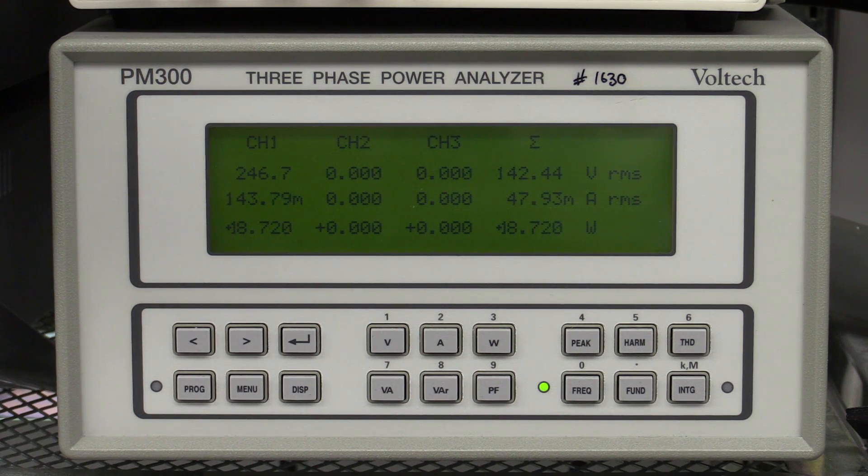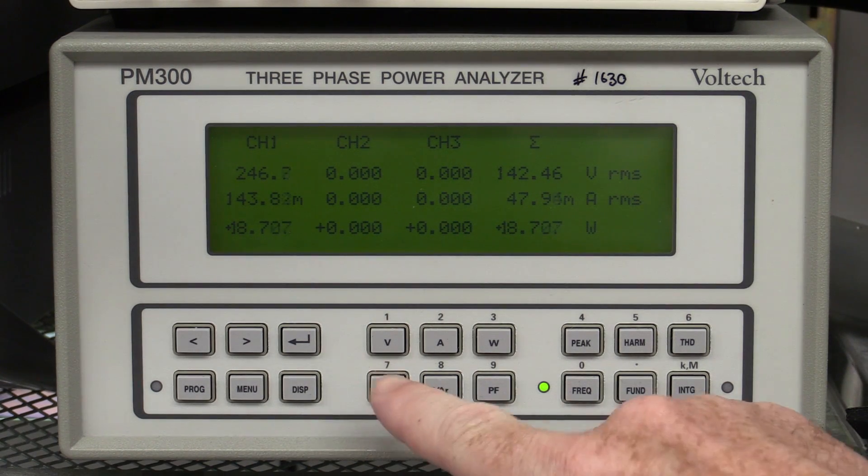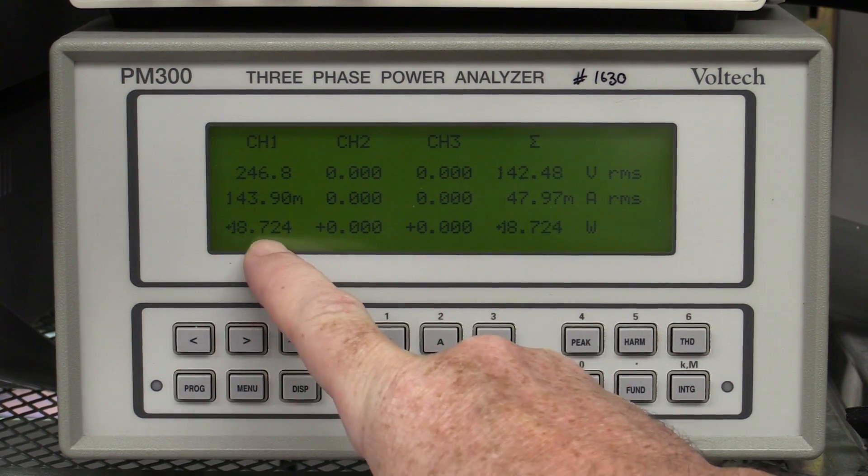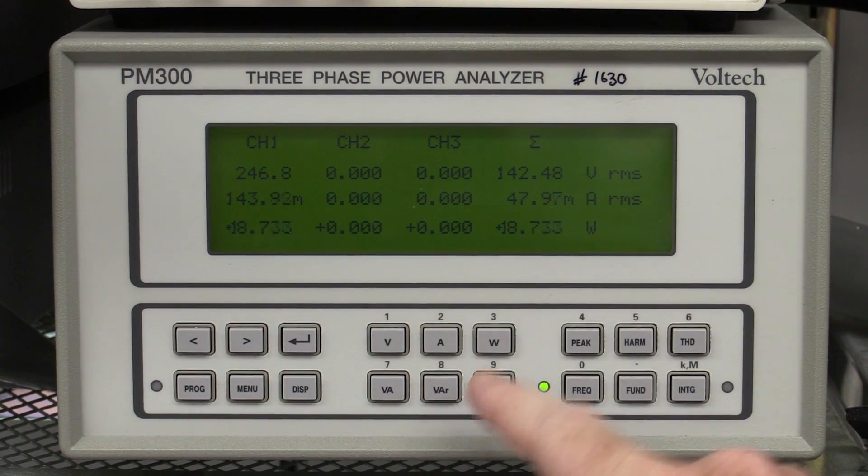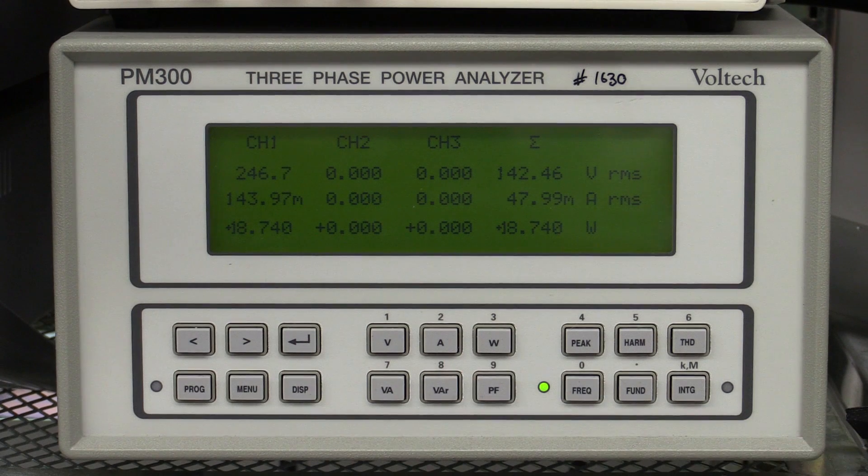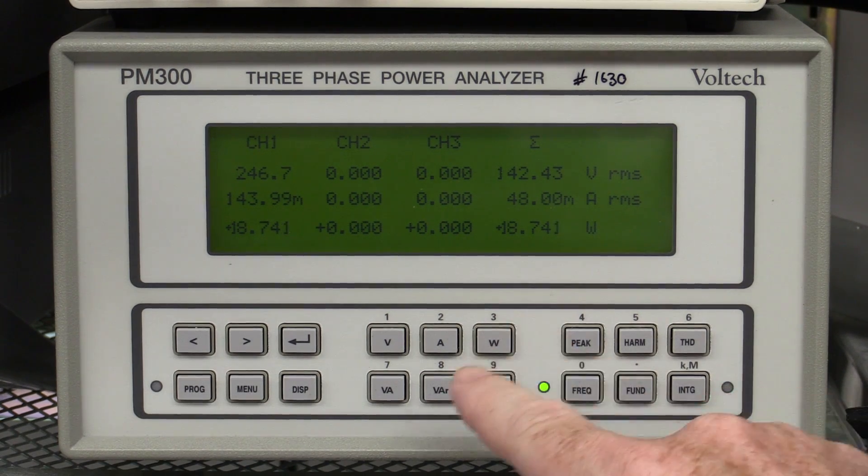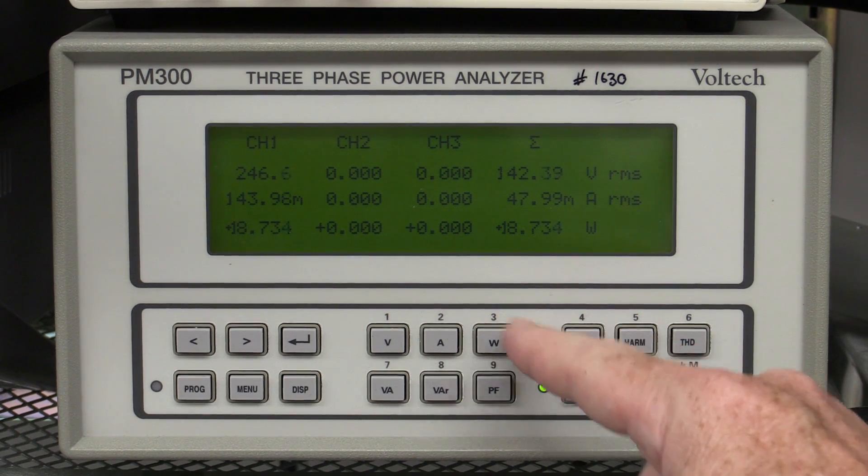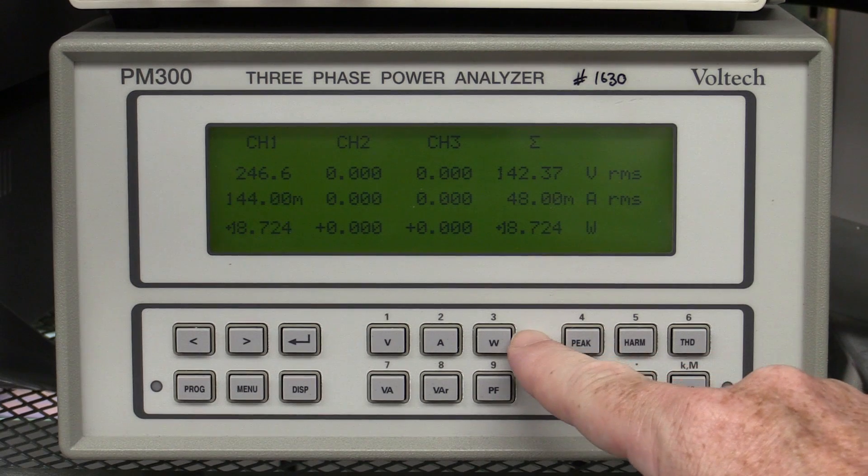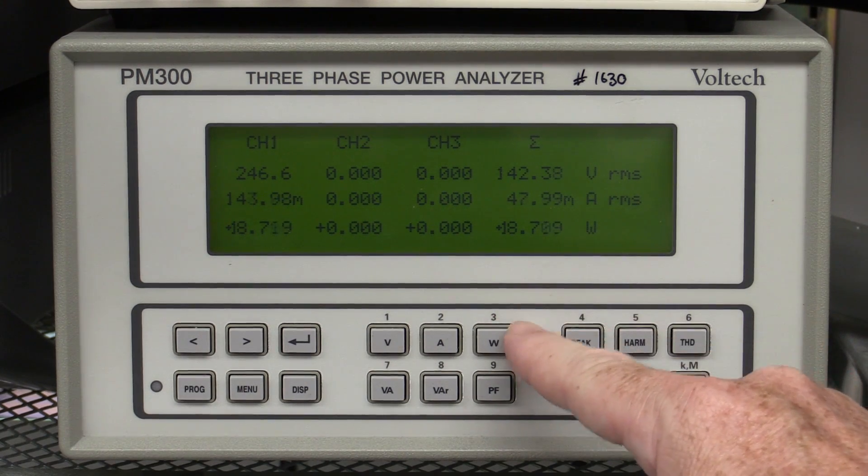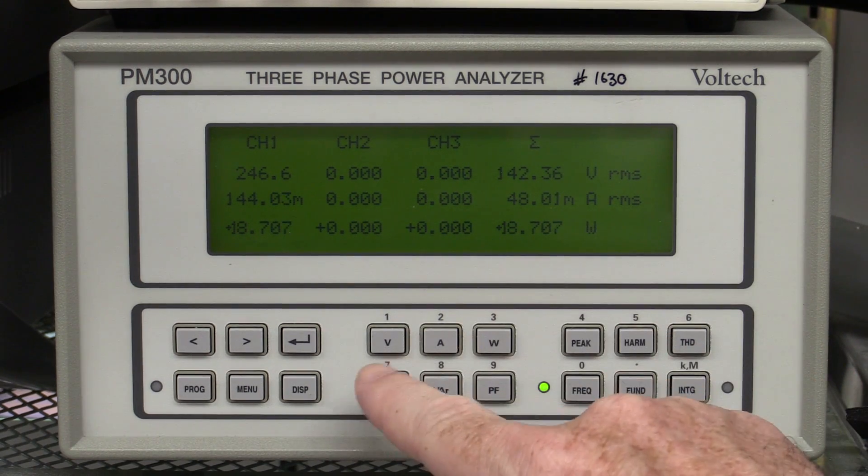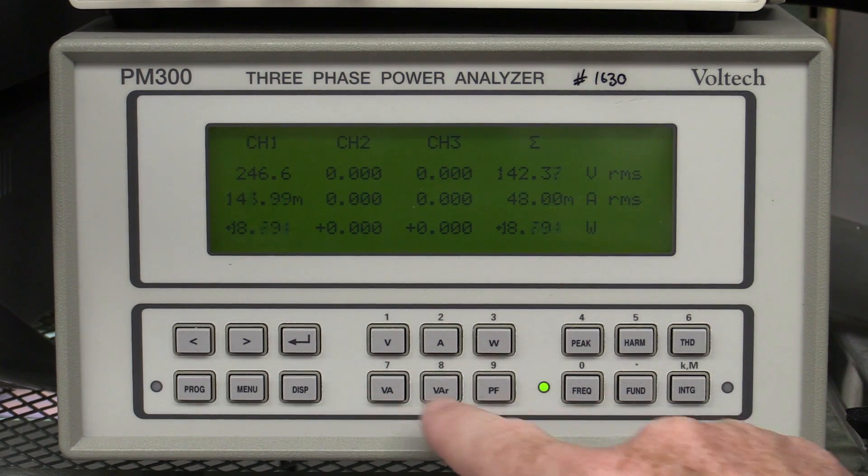Now, this is without our power correcting wankerizer gadget. Okay, so this is just the scope on its own. You can see it's drawing 18.7 watts here, and by the way, watts, for a typical consumer and also in my small office that I've got here, I am being charged watts. If your bill says kilowatts, you're being charged kilowatt hours, then you're paying for real power, not apparent power, which we're going to have a look at in a second.